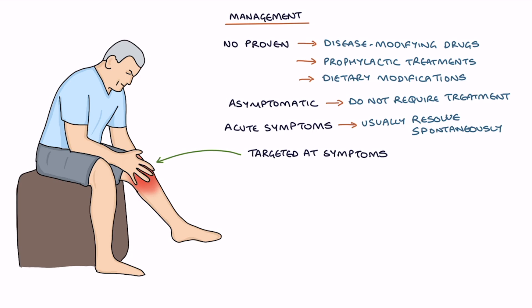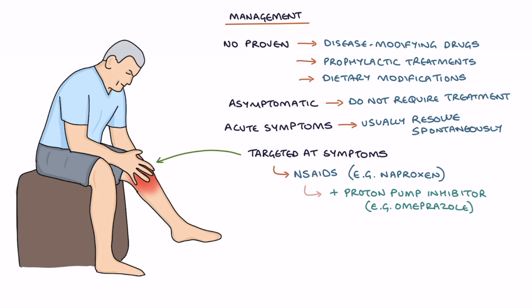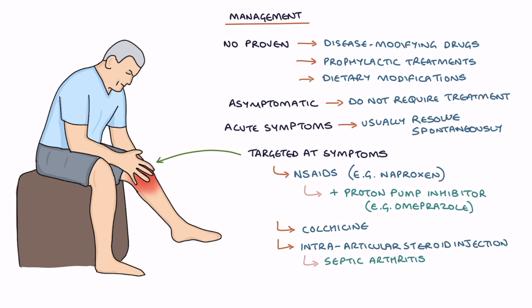Treatment options for acute symptoms include NSAIDs, or non-steroidal anti-inflammatory drugs, such as naproxen, first line. This is often co-prescribed with a proton pump inhibitor such as omeprazole for gastro-protection. Other options are colchicine, intra-articular steroid injections — though septic arthritis needs to be excluded before giving a steroid injection into the joint — and finally oral steroids.